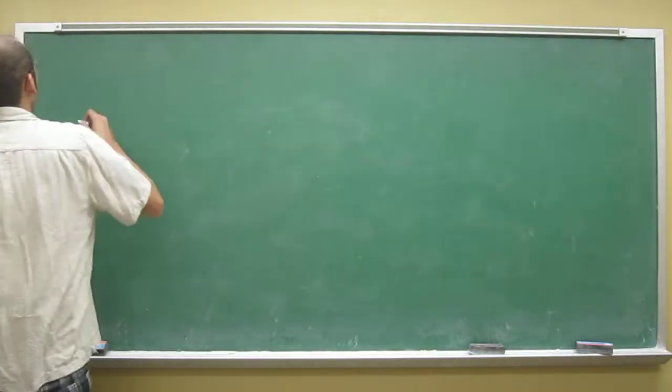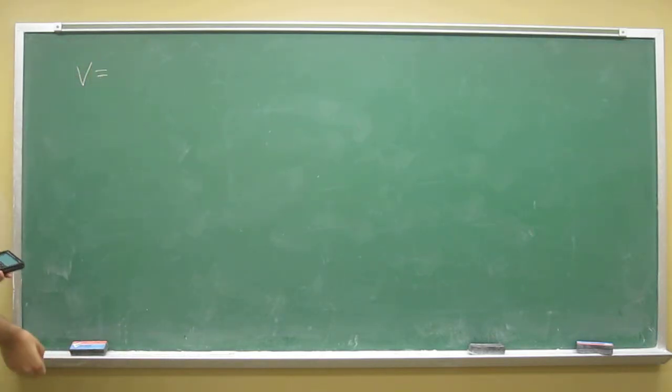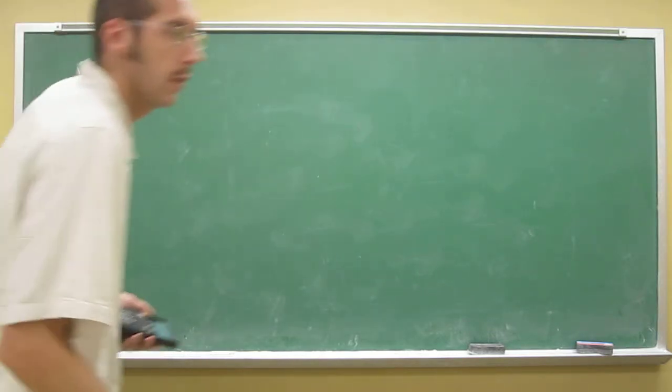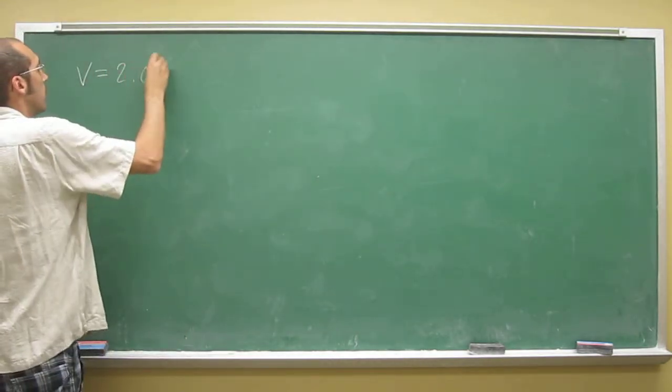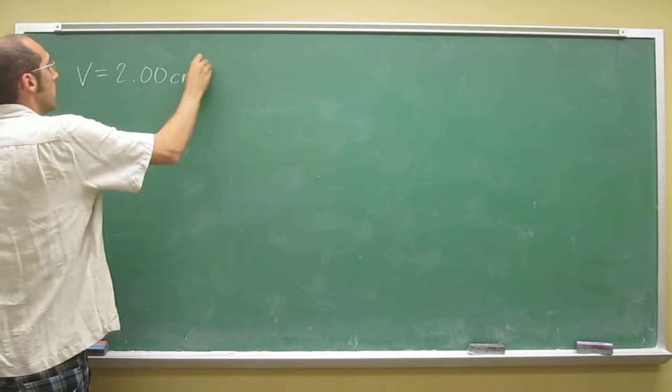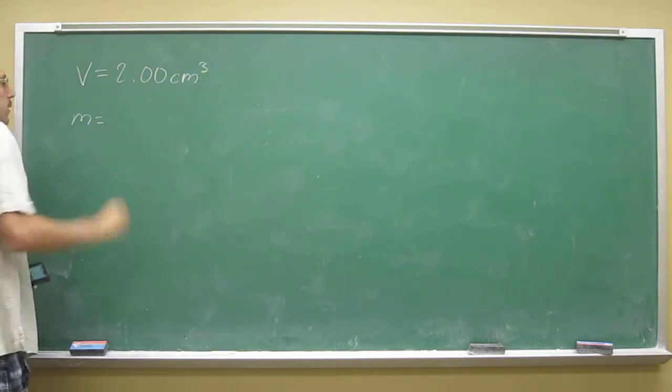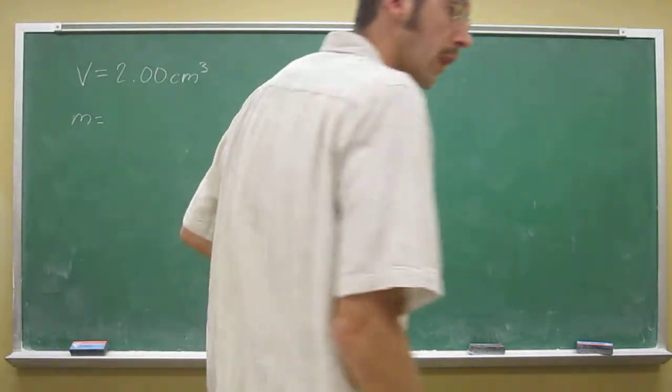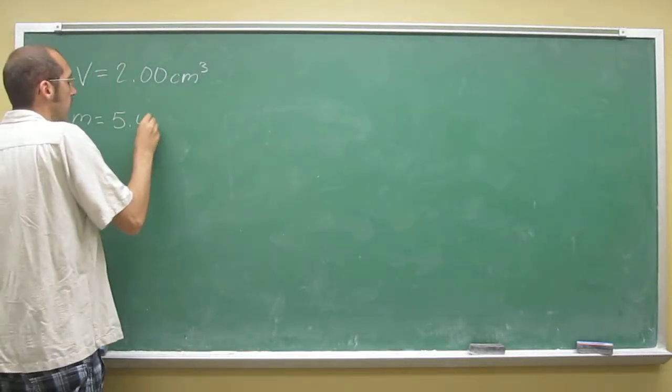Remember, we want to first write down the numbers given to us in the problem with the correct units. The volume was 2.00 centimeters cubed, and the mass was 5.40 grams.